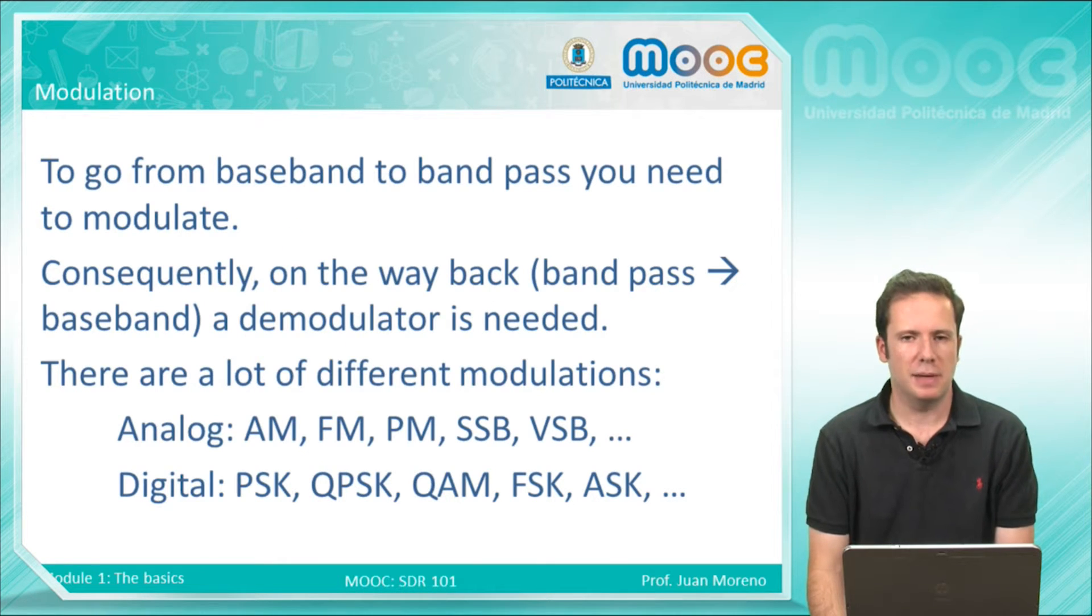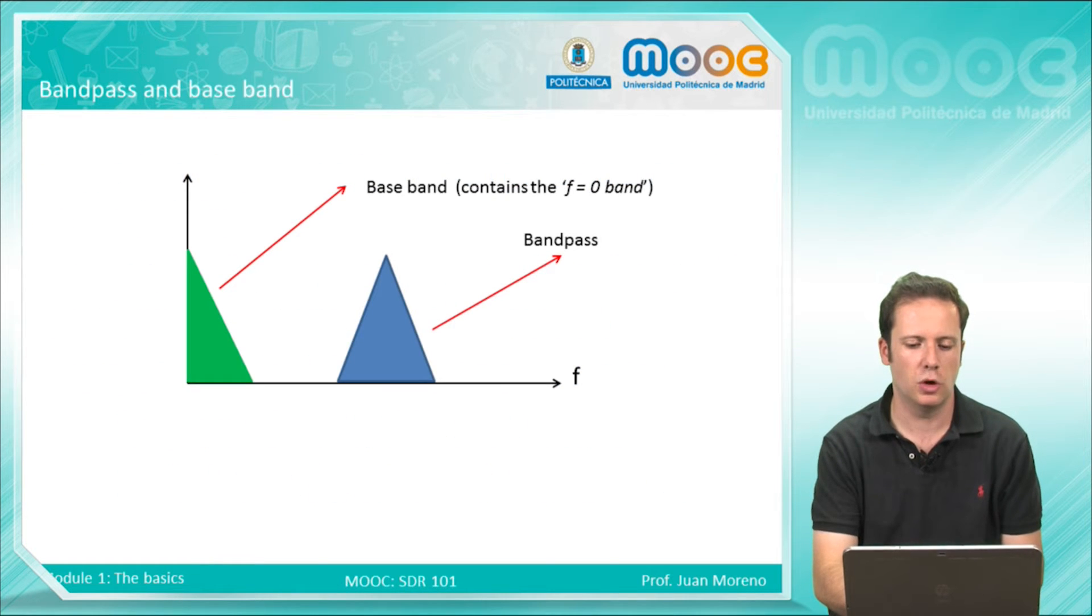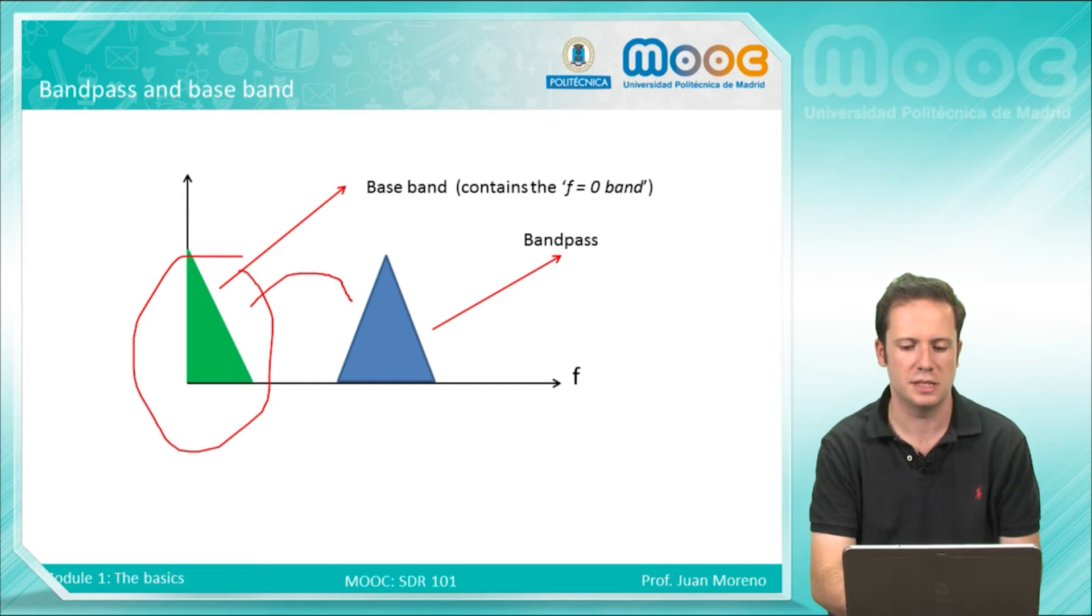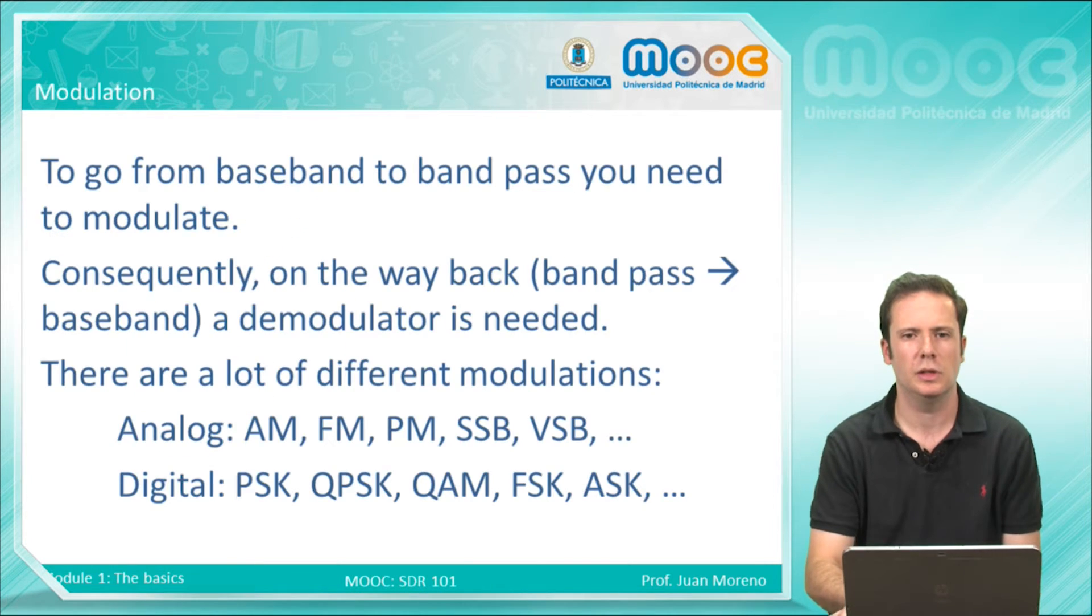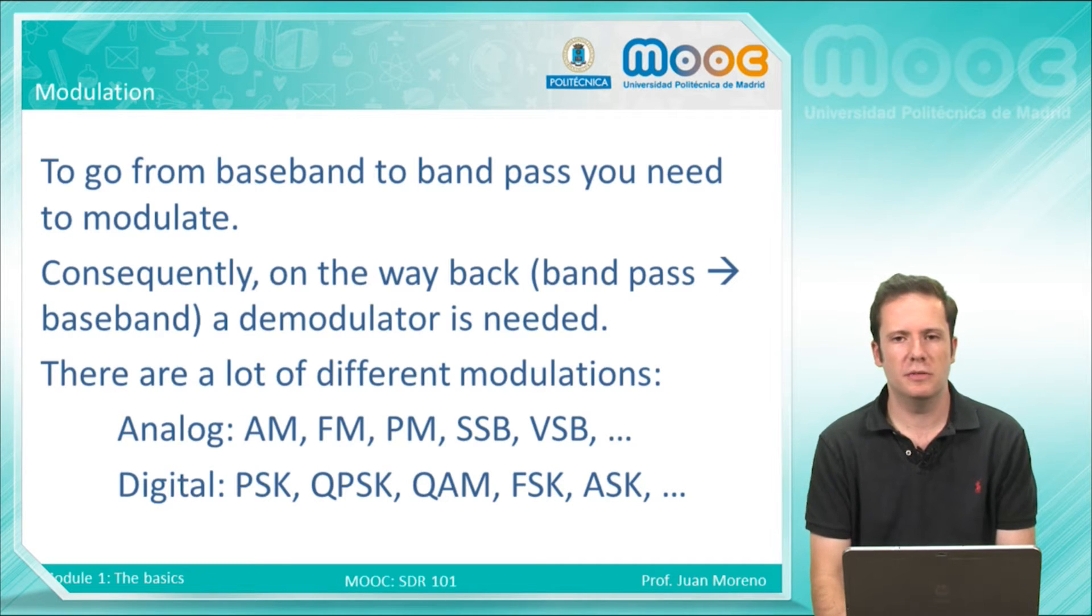To go from baseband to bandpass, you need to modulate. So this means to go from this band, the baseband, to this band. Consequently, the way back to be done in the receiver, going from bandpass to baseband, should be done via a demodulator.